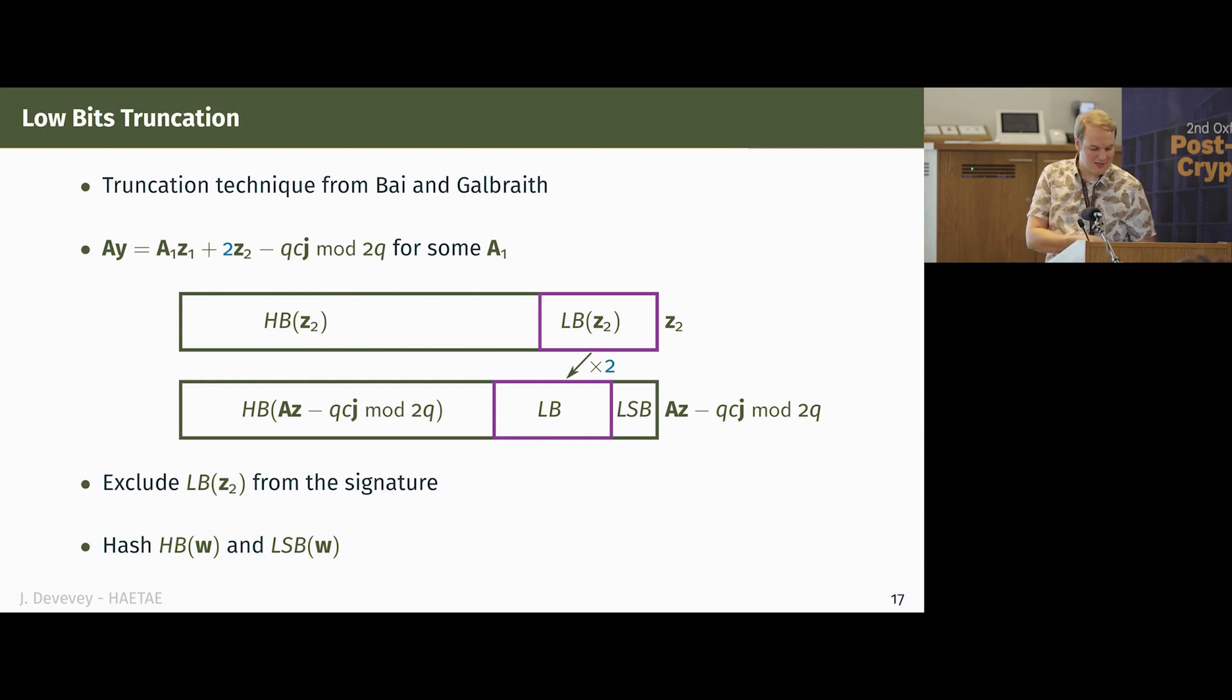And this is where the fact that we don't have identity, but two times identity comes back, because now if we get rid of the low bits of Z2, we are shifting what cannot be recovered anymore from the commitment. Hence, in the algorithm here, we are hashing the high bits of W and its least significant bit. Over than that, it works exactly as in Dilithium. We have some kind of hint that is incorporated to the high bits of Z2 that allows to make the computation right, because we may have some carries that appear.